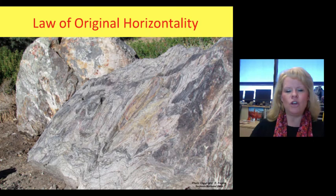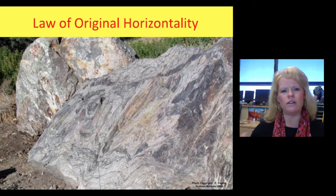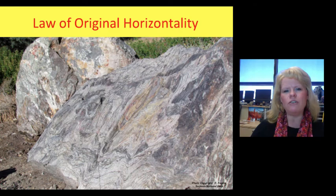Look at this big chunk of gneiss I found in Sequoia National Park in California. See all these funky curves and folds in the rock? They weren't made that way. The rock had a very different orientation and shape before it was ever laid down. Whenever you have folded rocks like this, that happened after the rock was originally made.